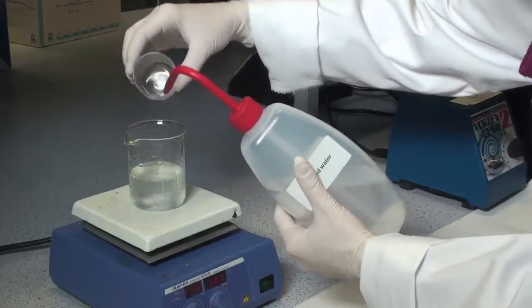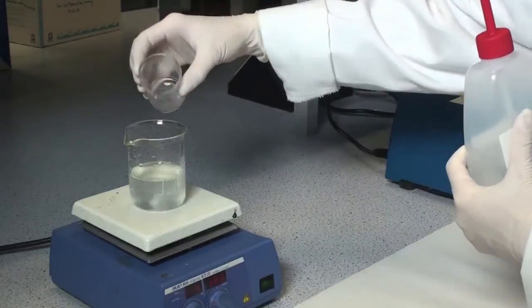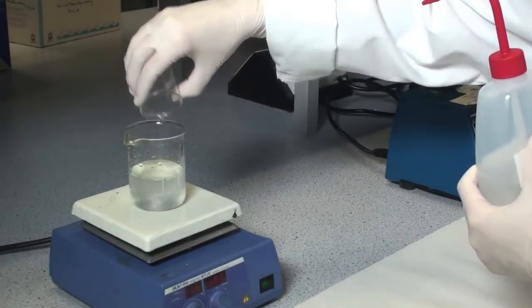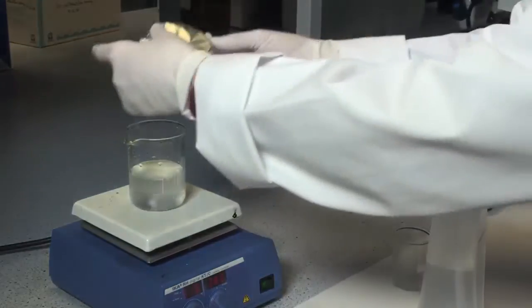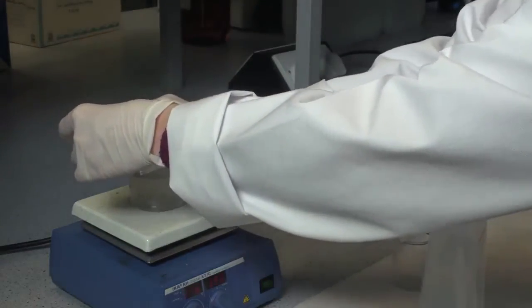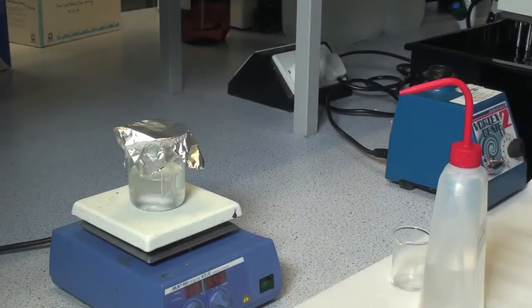Use a minimum volume of water to rinse out the beaker and add this to the stirring starch solution. Cover the beaker with aluminum foil and allow to stir and heat for approximately 5 minutes until the starch completely dissolves.